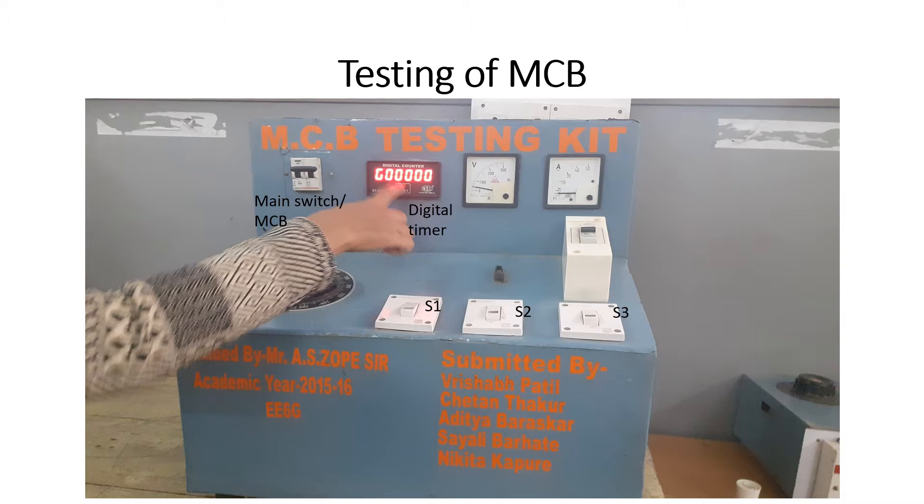At this particular position we are having MCB which is under test. Here you will find three switches, switch S1, S2 and S3. Now I will show you the actual internal diagram and from that diagram you will understand the exact use of S1, S2 and S3. Today to perform this particular testing of MCB we are going to operate only third switch that is S3.